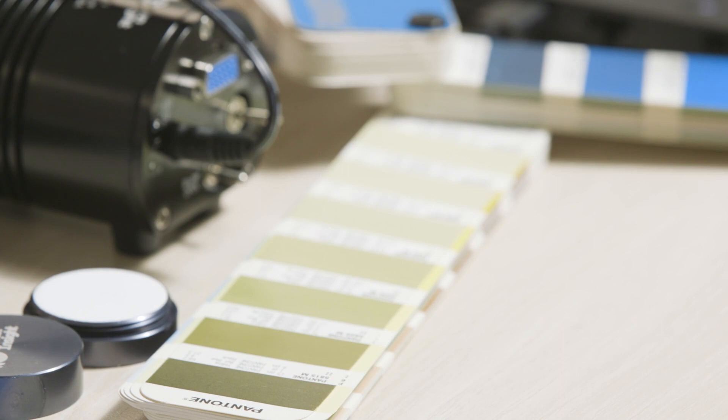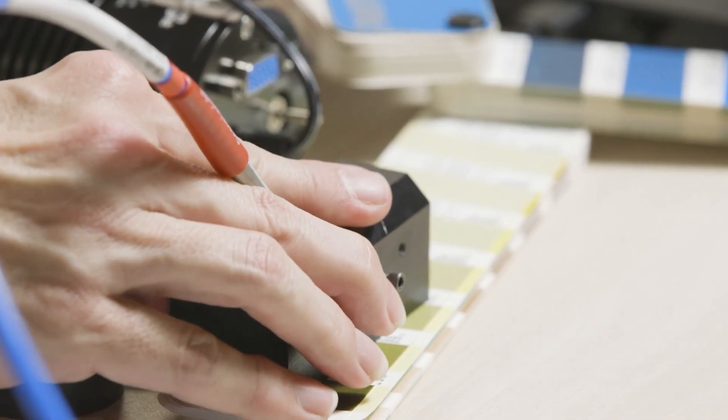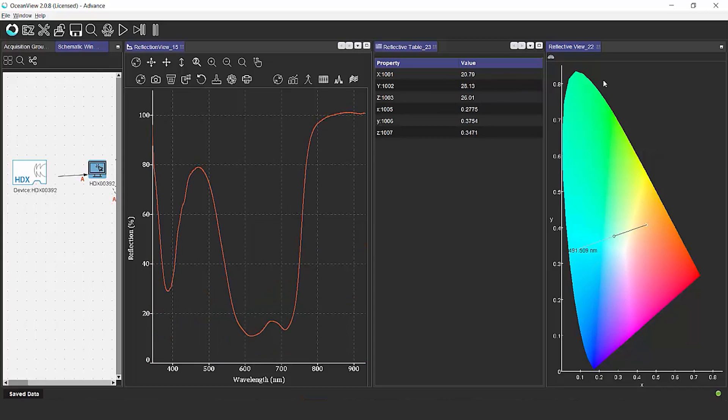As we change to a different color, again, we can see how the chromaticity diagram is reflecting the color that we're actually measuring.